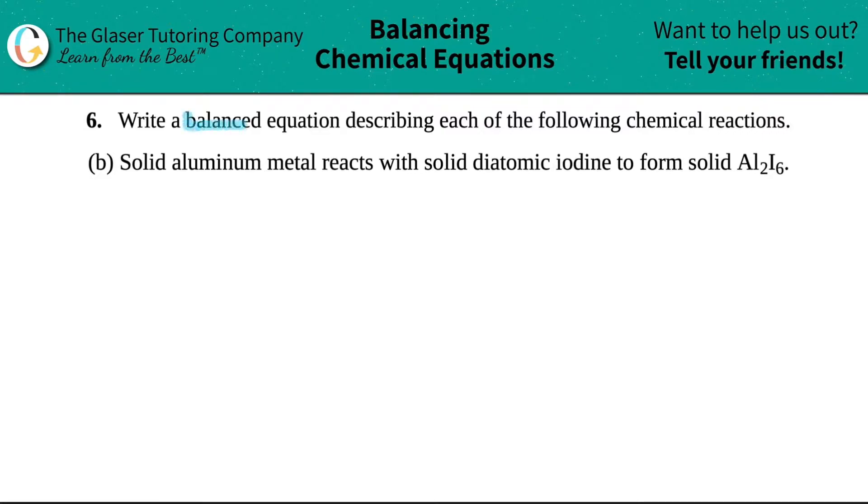Number six, write a balanced equation describing each of the following chemical reactions, and then we have letter B. In this example, it says solid aluminum metal reacts with solid diatomic iodine to form solid Al2I6. So we basically just have to take this information, which was written to us in a sentence form, and we just have to write it in terms of a balanced chemical equation.